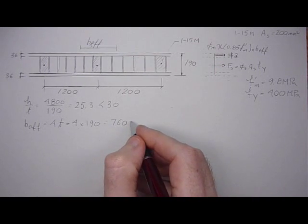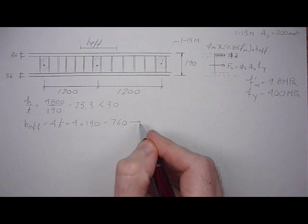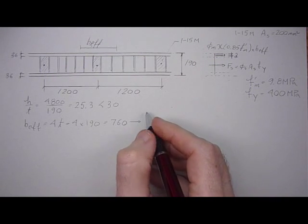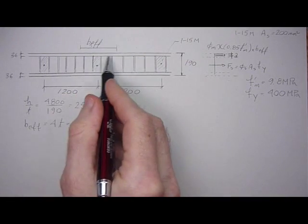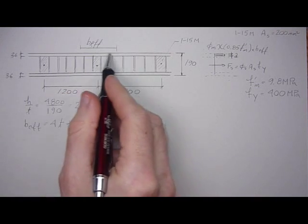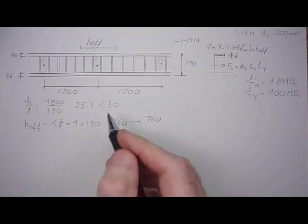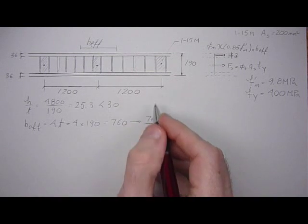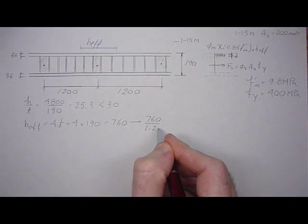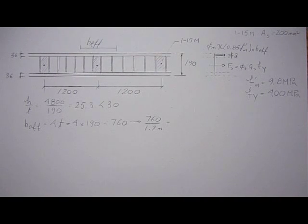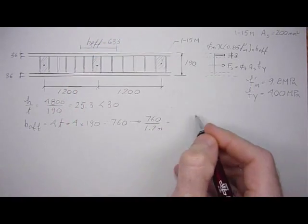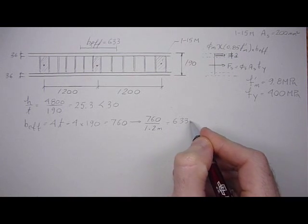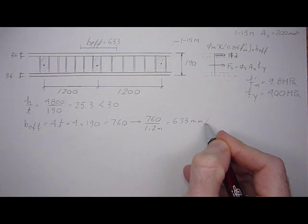Now, we also want to work on a per meter basis. So let's take the 760 millimeters, which is effective per core. Each core has an effective width of 760 flange available. But on a per meter basis, that would be 760 over the spacing, 1.2 meters. So 760 divided by 1.2, 633. So 633 millimeters per meter.